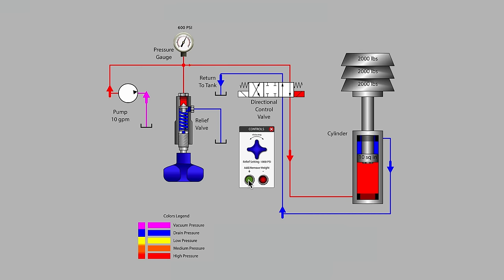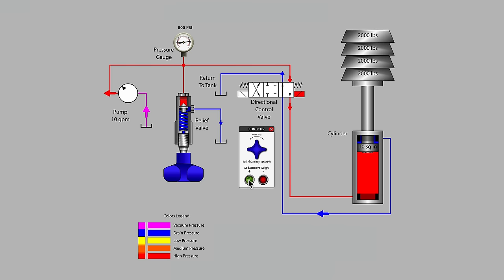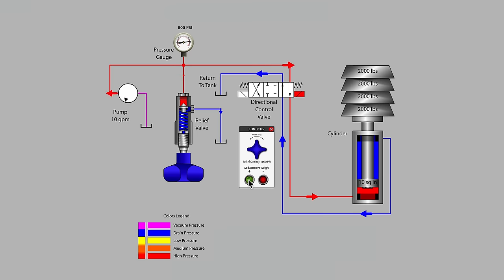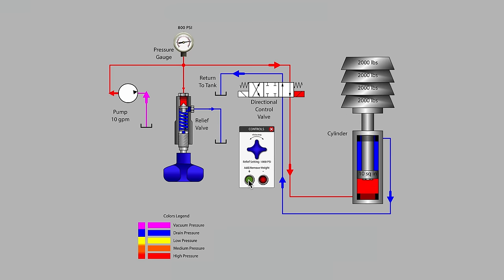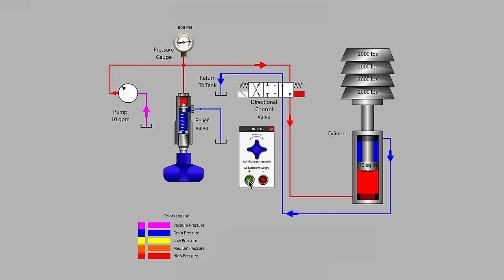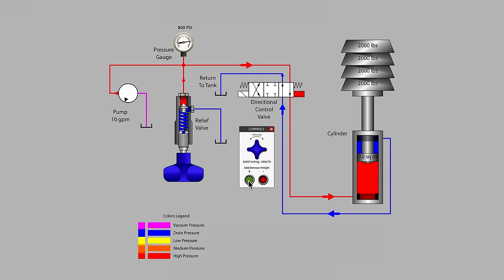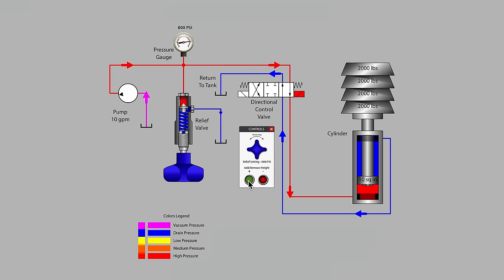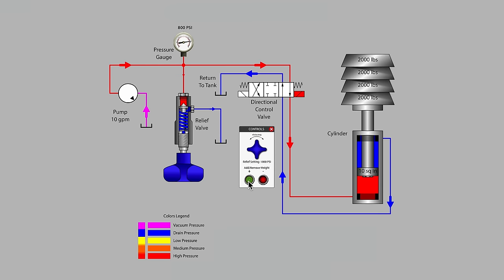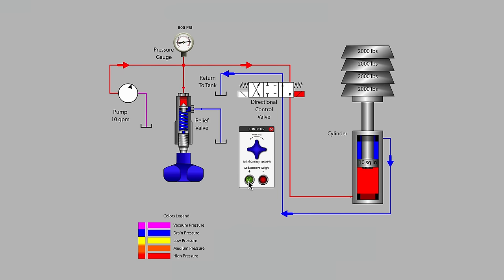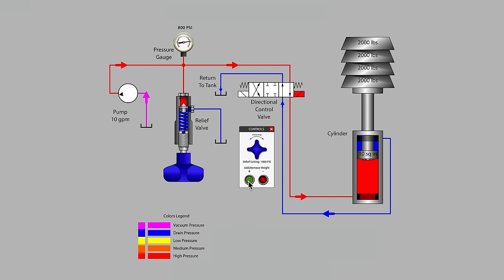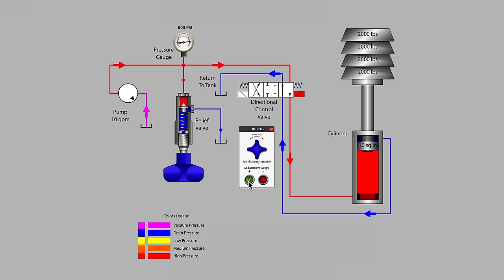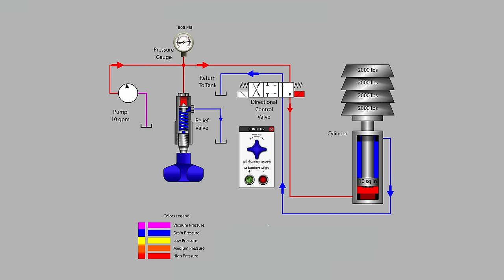Remember that the relief valve is set to 1000 psi, but clearly the valve opens at 800 psi and begins to direct at least some of the system flow back to tank. In this case, the cracking pressure is 800 psi, where the relief valve setting is actually 1000 psi. The difference between the cracking pressure and the setting pressure for this particular relief valve is 200 psi.